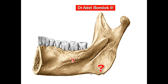The medial pterygoid muscle is attached at the angle region of the mandible. The temporalis muscle is attached to the coronoid process. Above the mylohyoid line is related to the sublingual salivary gland; below the mylohyoid line is related to the submandibular salivary gland.